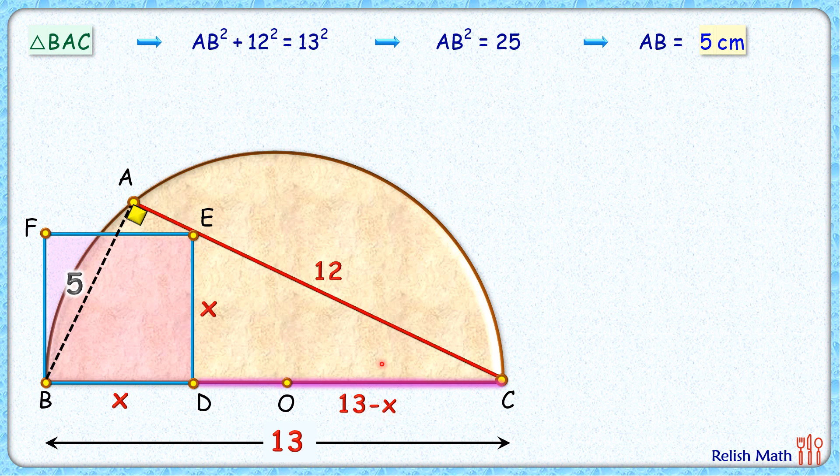Now if you look at this triangle CDE and compare it with the bigger triangle CAB, both of them are similar. Why? Because they have got this angle C common in them and this angle D here is 90 and A is 90 degrees. So by angle-angle similarity both the triangles are similar.